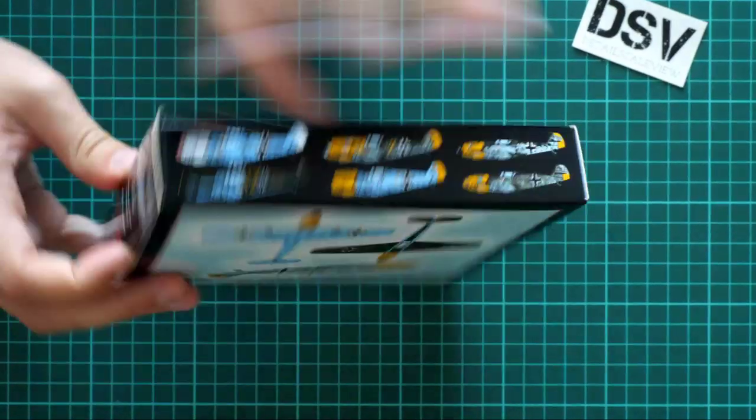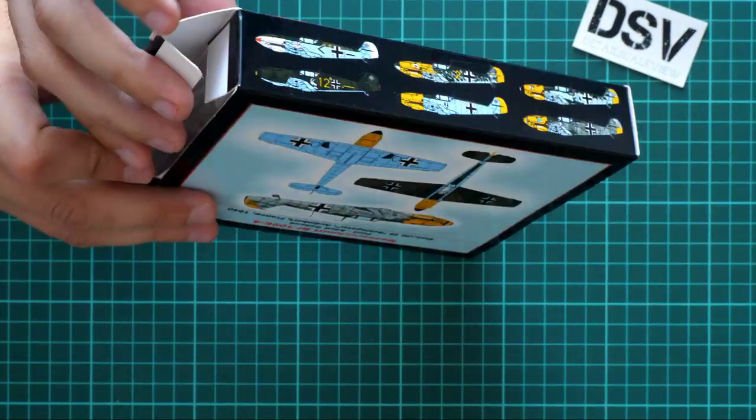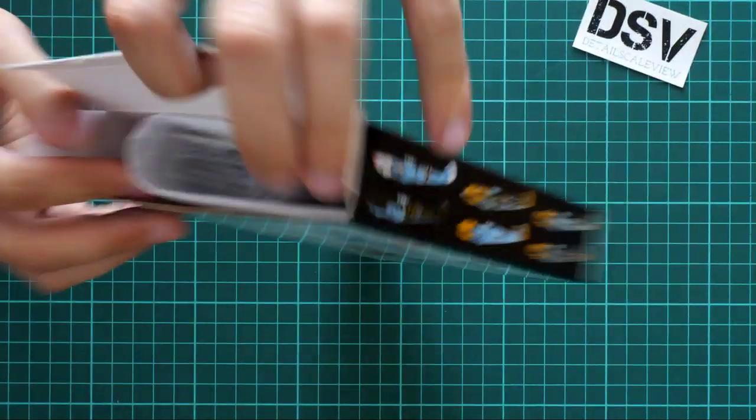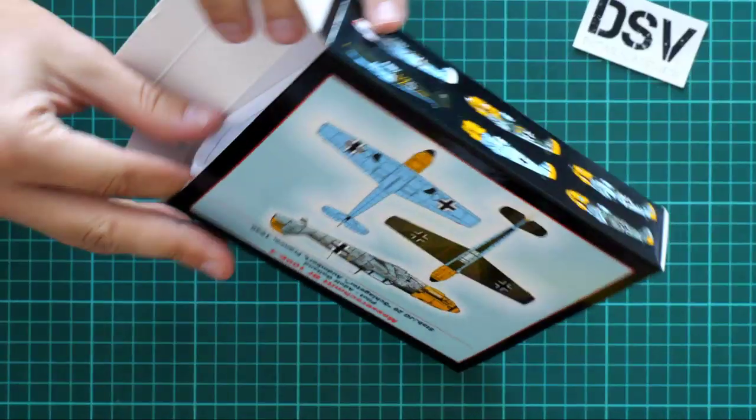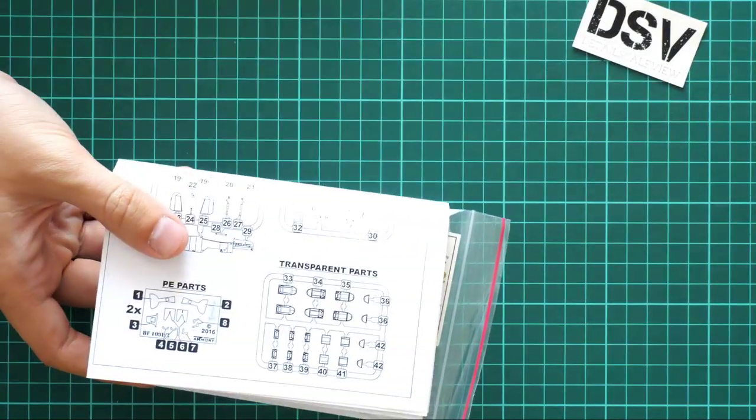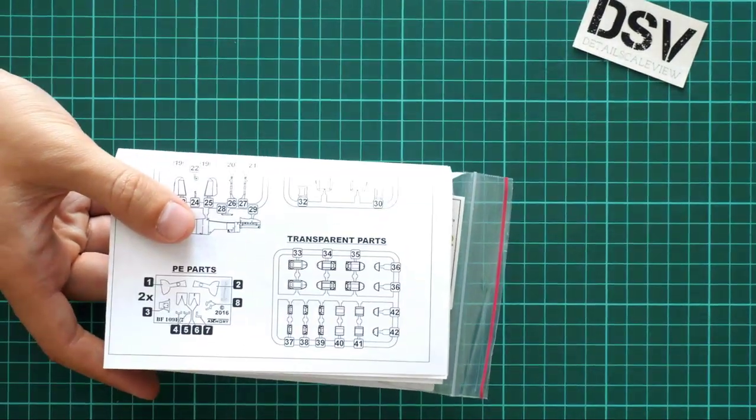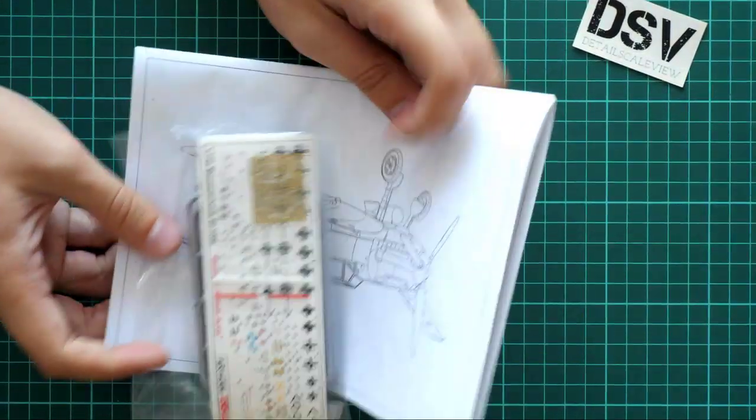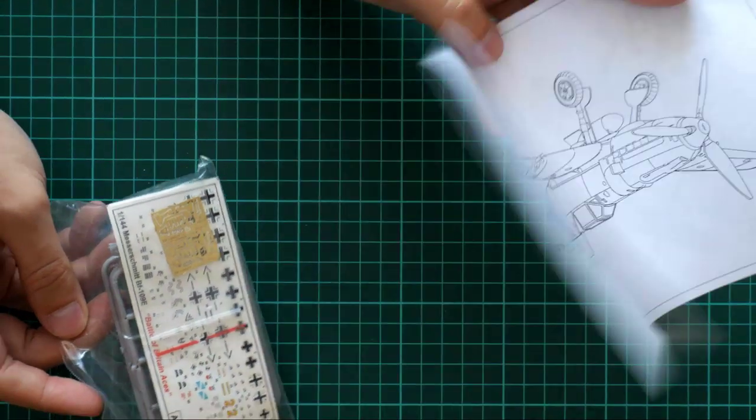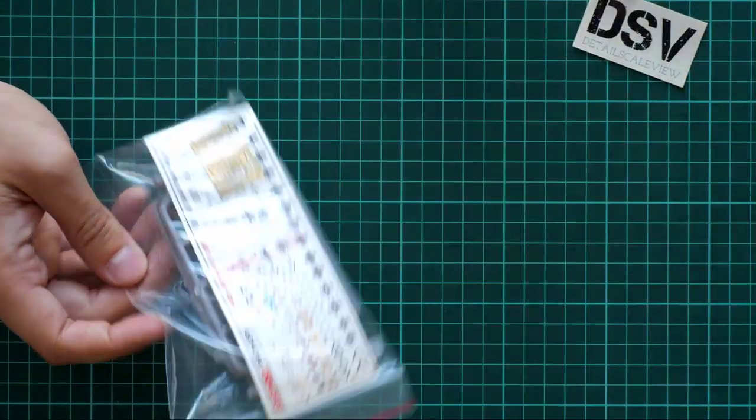We are going to open it and take a look inside. Here is what we have inside. As you can see quite tight packaging, but still all the parts should arrive to you intact. We have the assembly manual, everything is wrapped into the assembly manual.